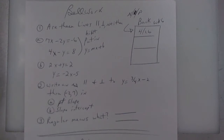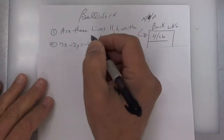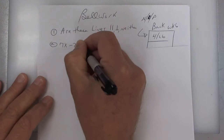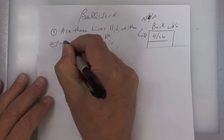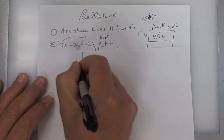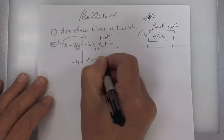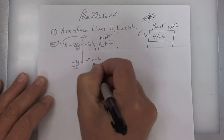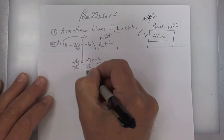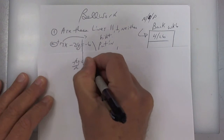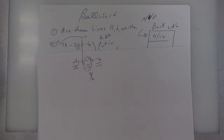What you have to do is get y by itself. To get y by itself, draw your line and circle the y. You want to move the plus 7x to the other side, so you're going to get negative 2y equals negative 7x minus 6. Then divide everything by negative 2, so your slope here is positive 7 over 2.